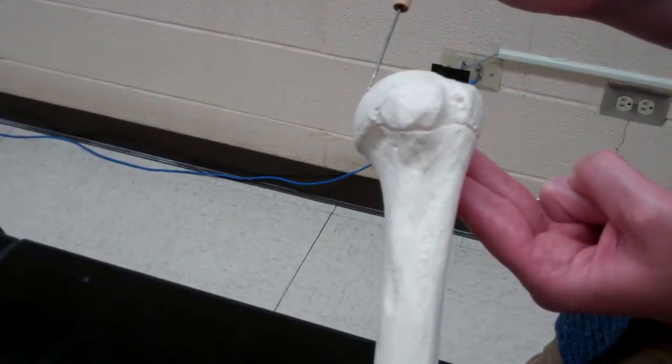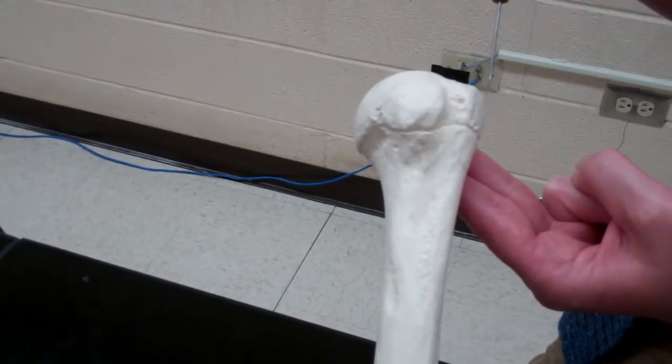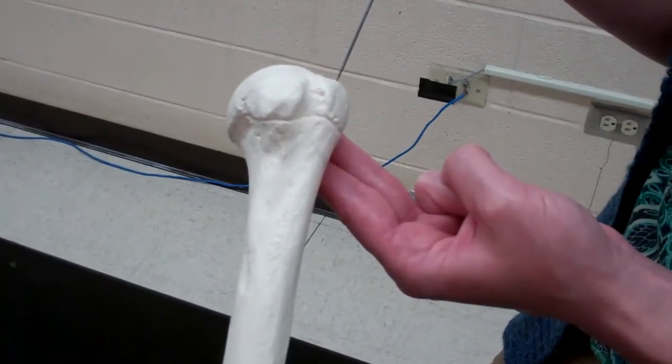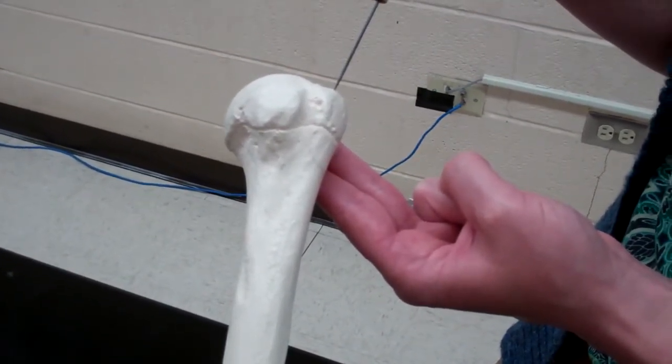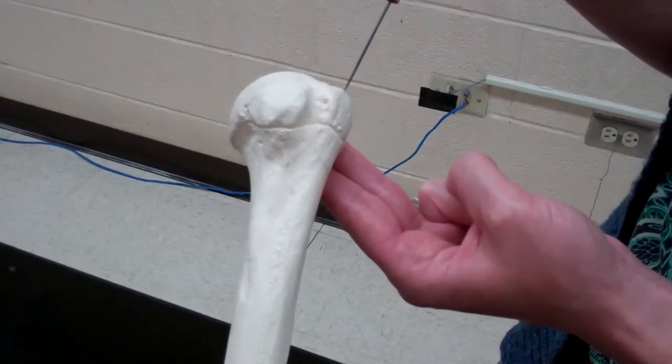So then we can see to the lateral side of that, there is a bump. This is a kind of large bump called the greater tubercle. The greater tubercle will always be lateral.